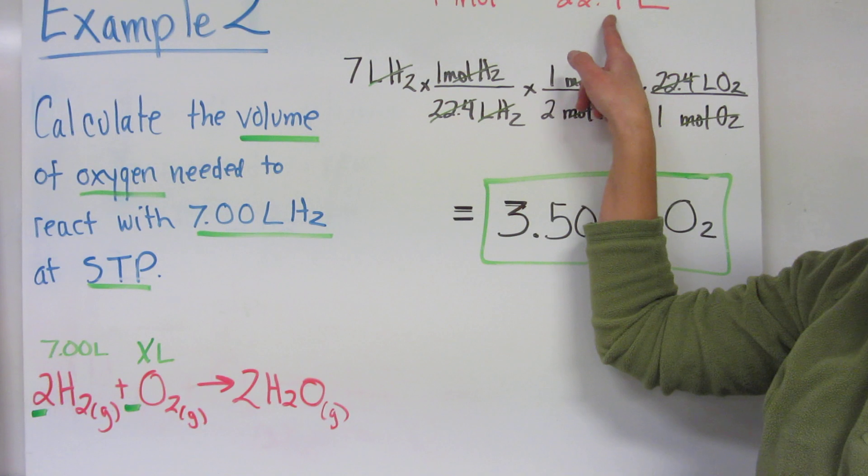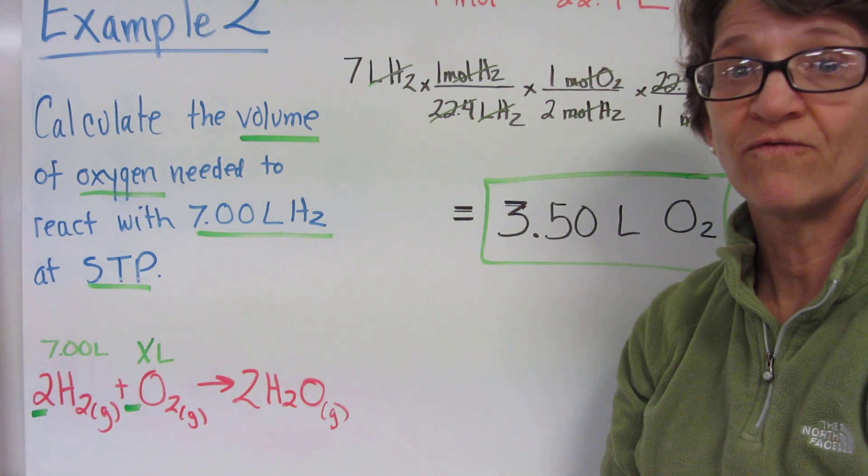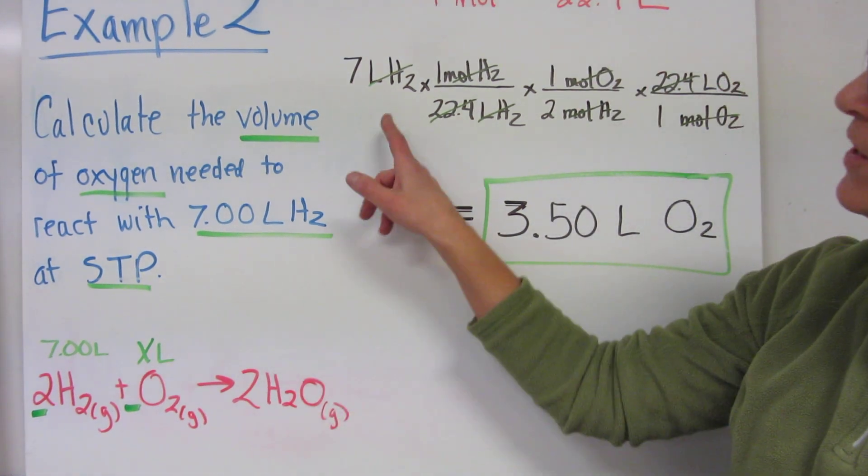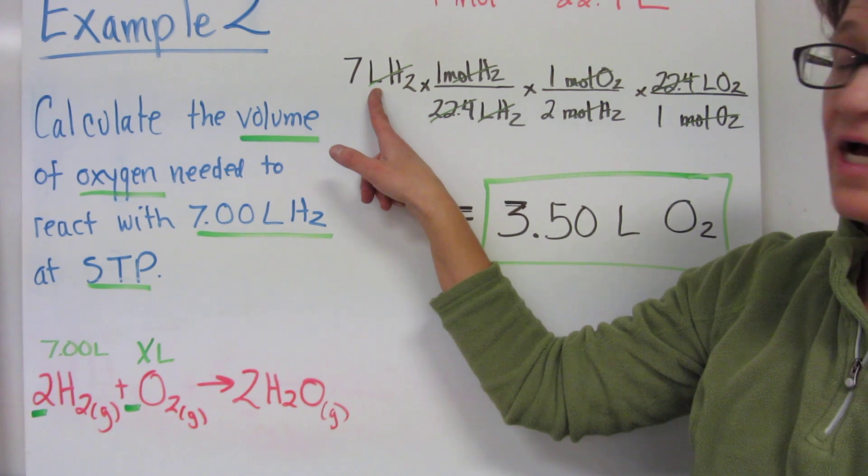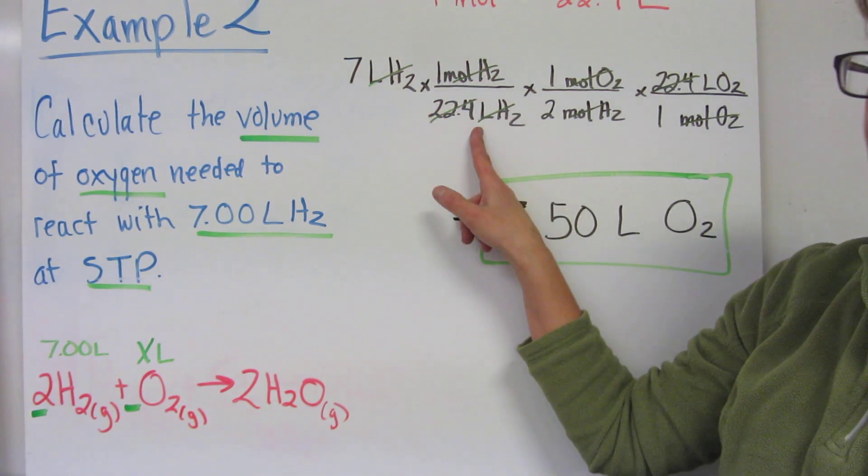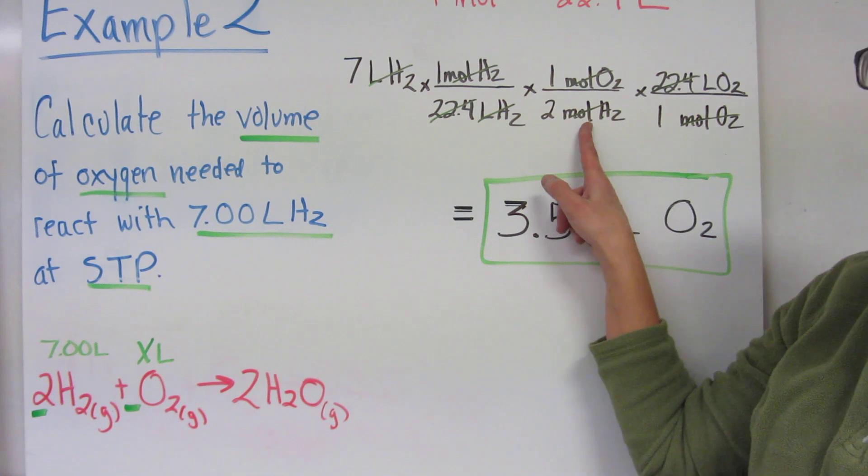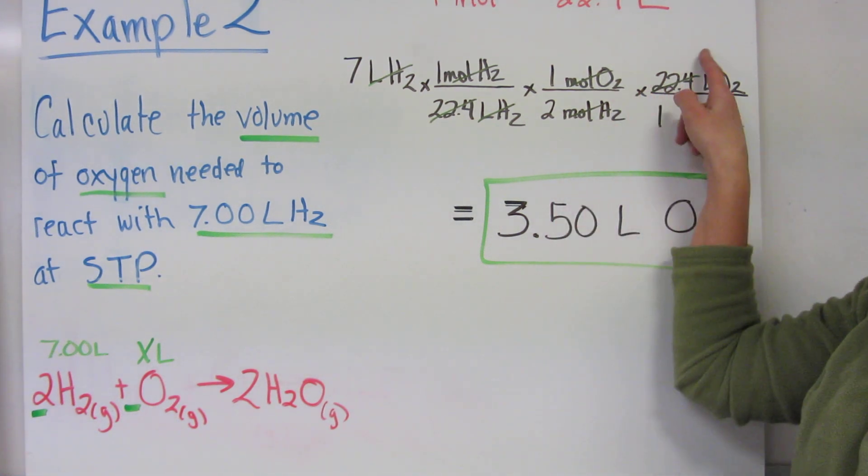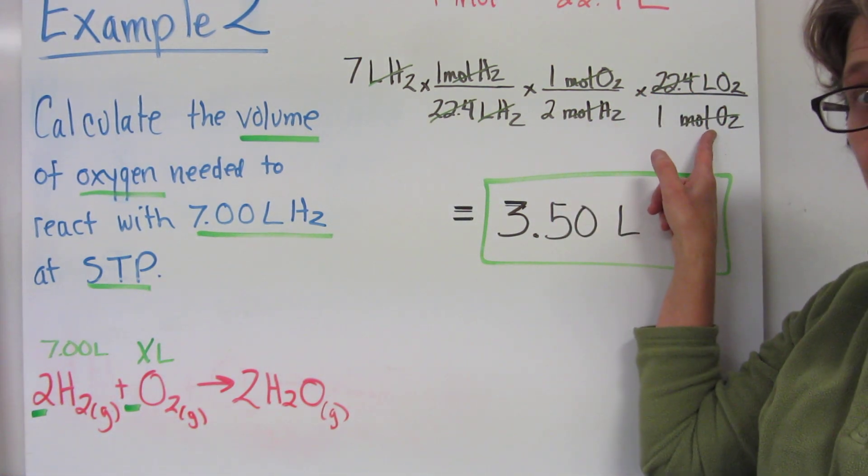We know that one mole of any gas occupies 22.4 liters at STP. So we can take our seven liters of hydrogen, convert to moles of hydrogen. Our next step converts to moles of oxygen, and then back to liters, but this time of oxygen.